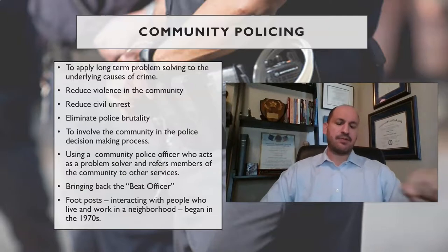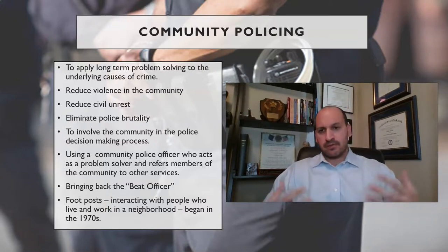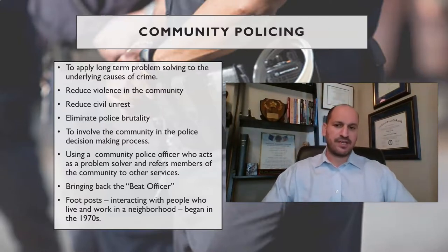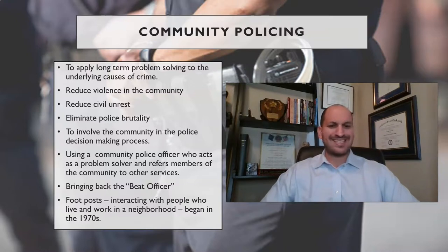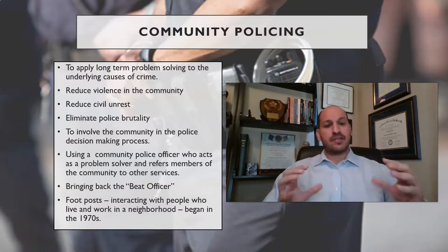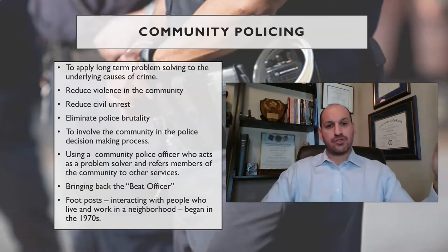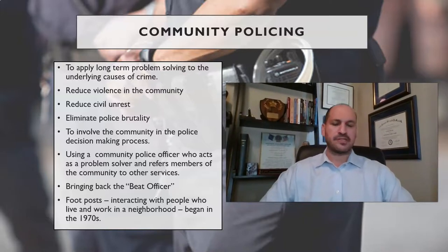Community policing is a philosophy of empowering citizens to develop a partnership and to work together — having officers seen as members of the community, not an occupying force that commutes in and leaves, but truly embedded in it. Some ideas of community policing include long-term problem solving, reducing violence, reducing civil unrest, eliminating police brutality, and involving the community in decision-making about how they're going to be policed. That's why we have 18,000 law enforcement agencies — policing is a very localized thing. It means bringing back the beat cop, as Robert Peel envisioned — foot posts, high visibility, getting cops out of cars.